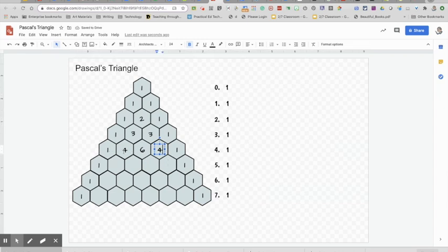1 plus 4, 5. 4 plus 6, 10. And it looks like I need to make my square just a tad bigger. Let's see if I can make it big enough. This one's going to need to be bigger. 10, 6 plus 4 is 10. 4 plus 1, 5.